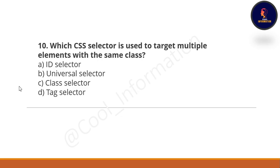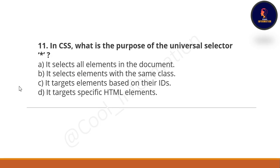Question 10: Which CSS selector is used to target multiple elements of the same class? Option A: ID selector. Option B: tag selector. Option C: class selector. Option D: universal selector. The correct option is option C, which is class selector.